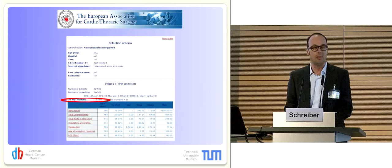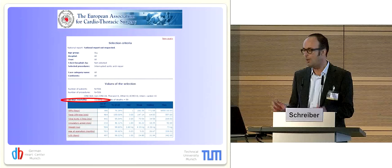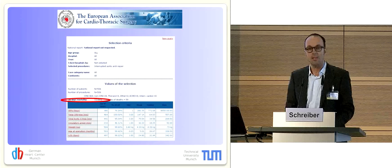I now move on to interrupted aortic arch. In the interest of time, I will not be able to elucidate all the issues. In the European database, I found more than 500 patients. Early mortality of those 500 patients lingers around 10%.